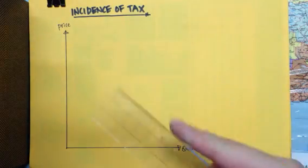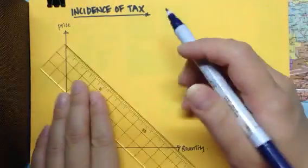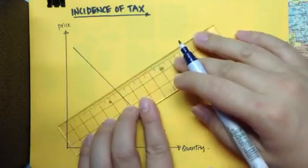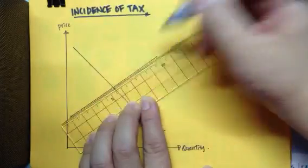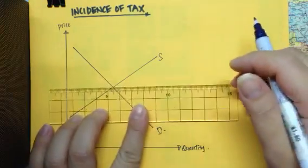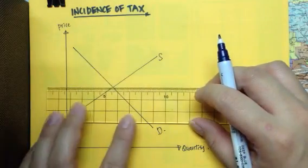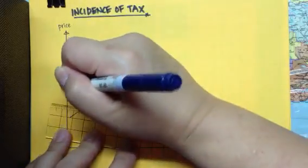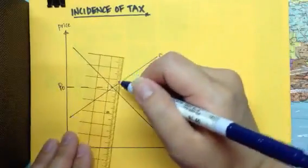Next, we'll draw our demand and supply curve. After drawing our demand and supply curve, it is a good habit to indicate the equilibrium price and quantity. This is my equilibrium price and my equilibrium quantity.